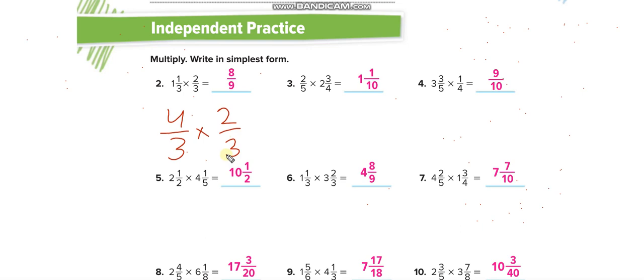Let me solve with two mixed numbers here. 1 times 3 is 3 plus 1 is 4, 4 over 3 times this one. Now 3 times 3 is 9 plus 2 is 11, so 11 over 3. 4 times 11 is 44 and 3 times 3 is 9, so 44 over 9.